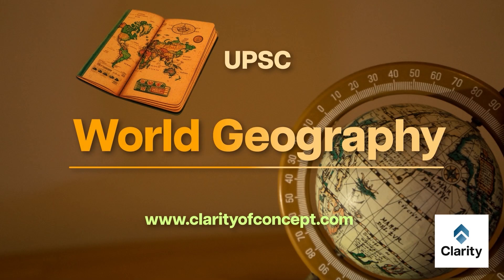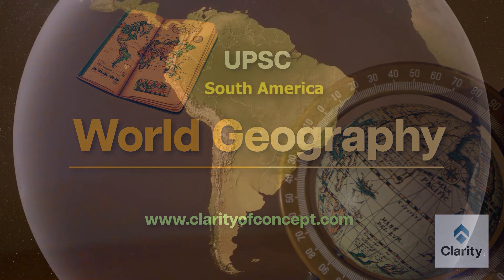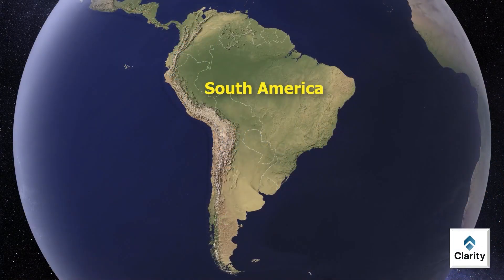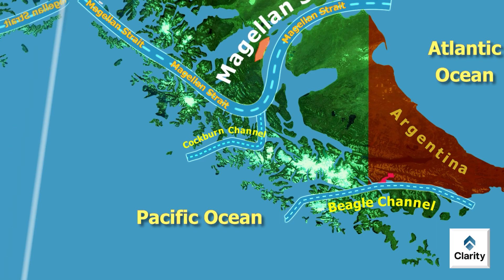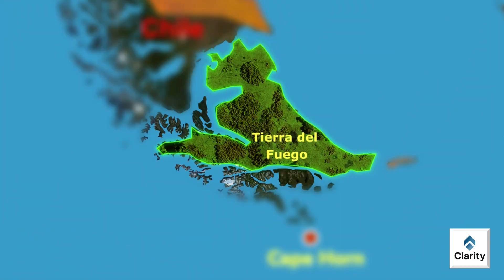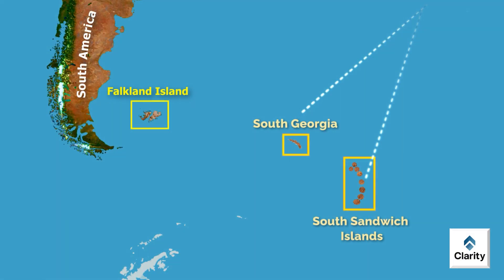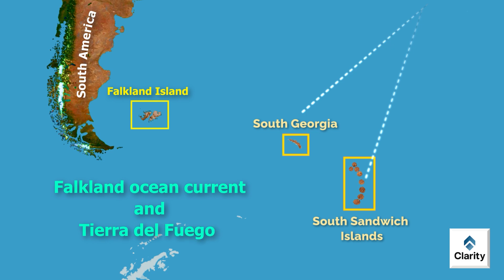Welcome to our Map-Based Fundamentals of World Geography video series. We are studying South America in this video series. We completed all the water channels and briefly studied the Tierra del Fuego in the previous video. In this video, we shall cover islands at the southern side of the continent including South Georgia Islands, South Sandwich Islands and Falkland Islands. We will also see the Falkland Ocean Current and Tierra del Fuego in further detail.